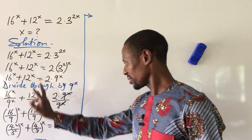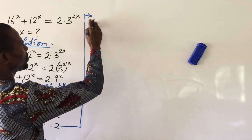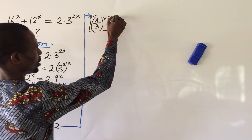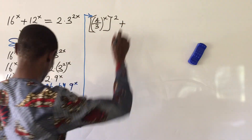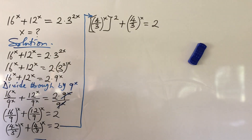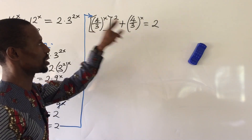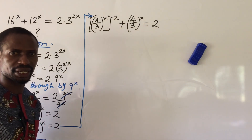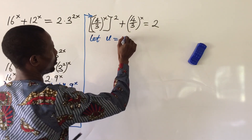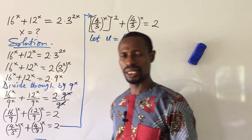We can rewrite this by bringing out the square according to the law of indices, giving (4/3)^x all squared, plus (4/3)^x equal to 2. We notice that what we have in both terms is the same expression raised to x. So we let u equal to (4/3)^x, and wherever we see (4/3)^x we put u.